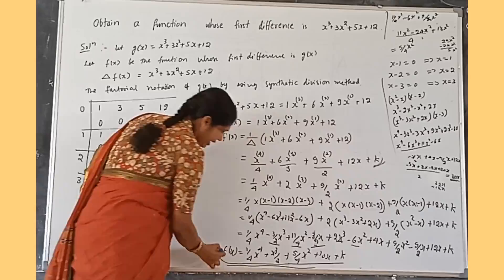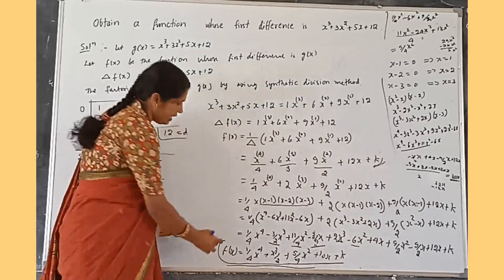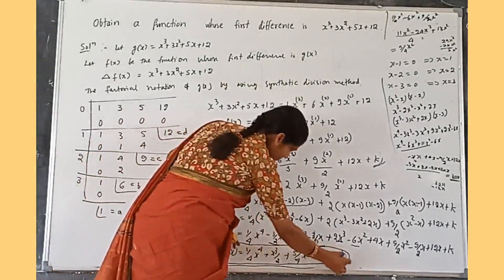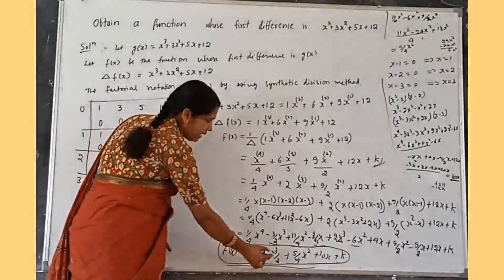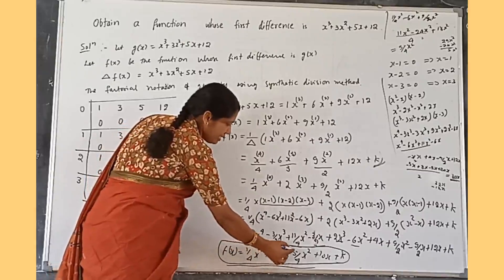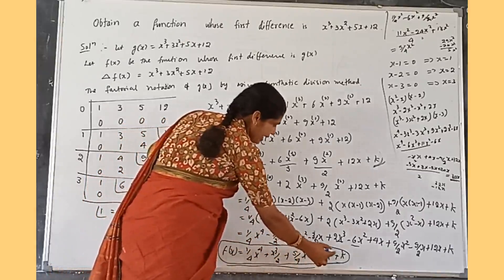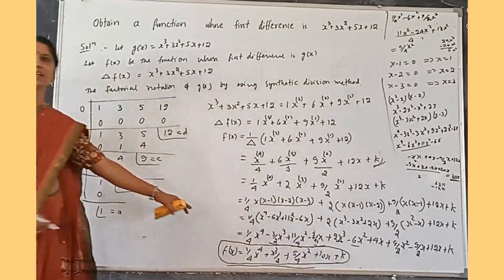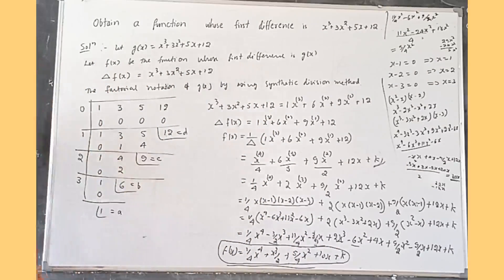So the required function is f(x) = (1/4)x⁴ + (1/2)x³ + (5/4)x² + 10x + k. This is the required function. Thank you.